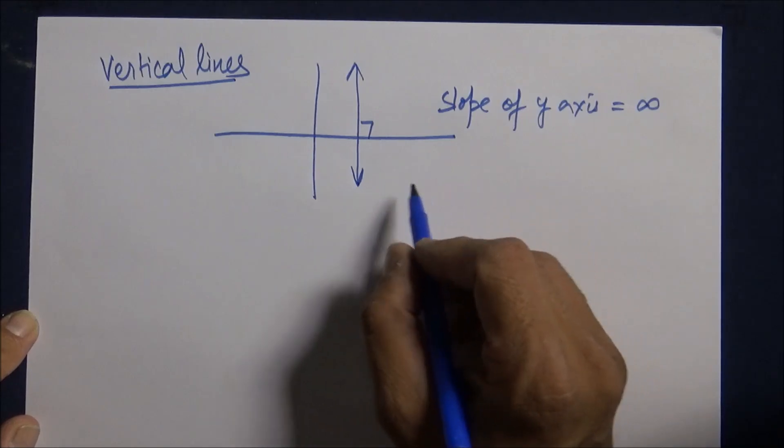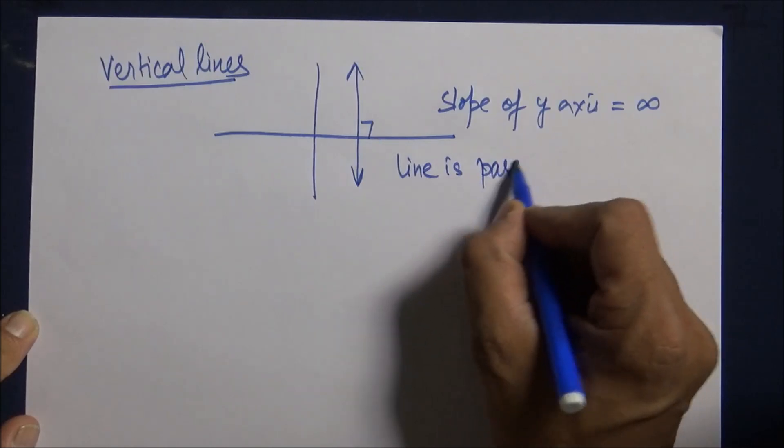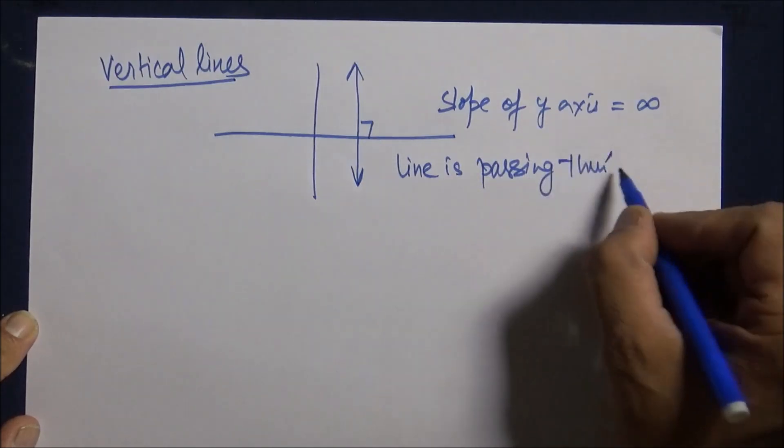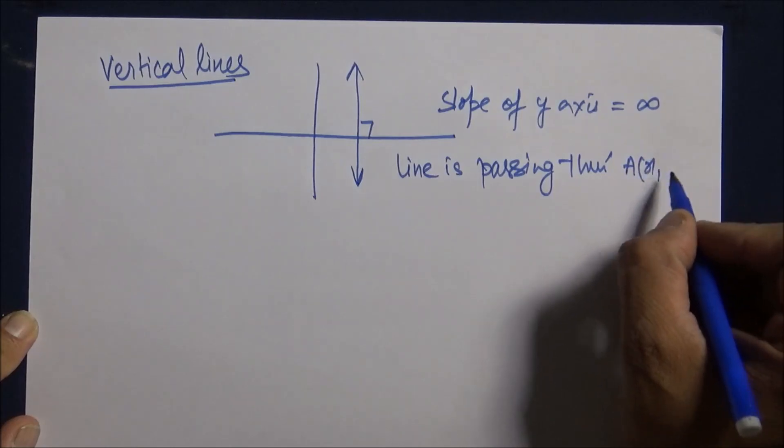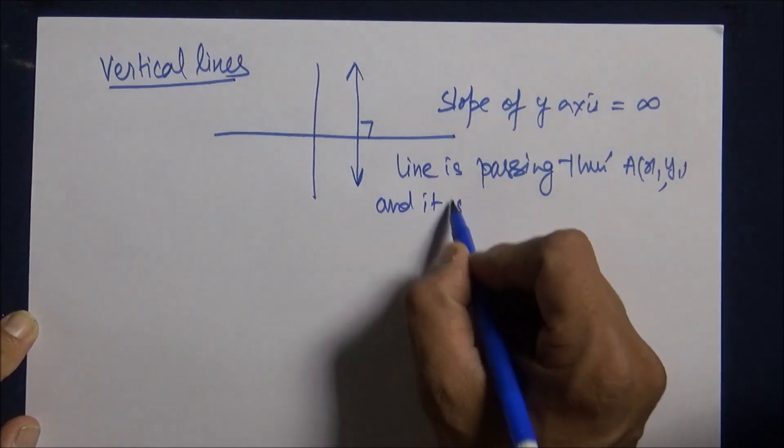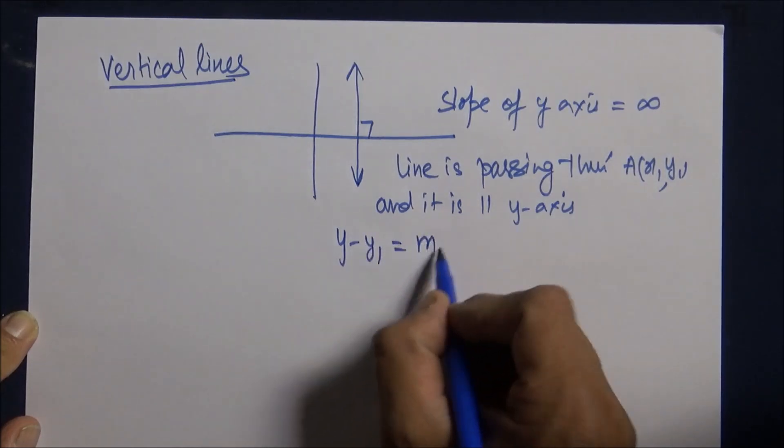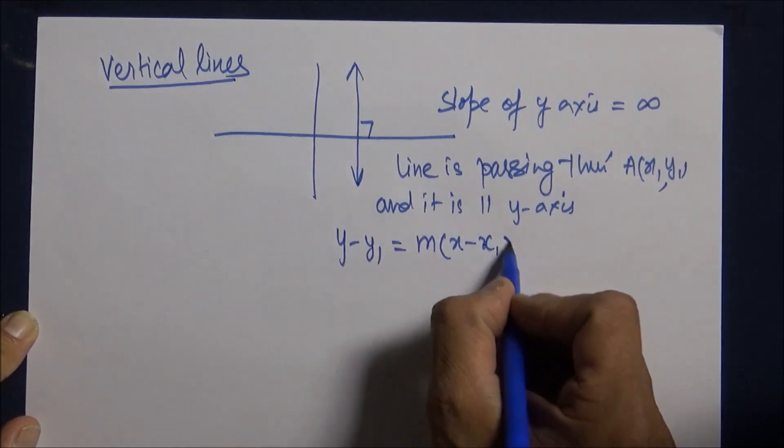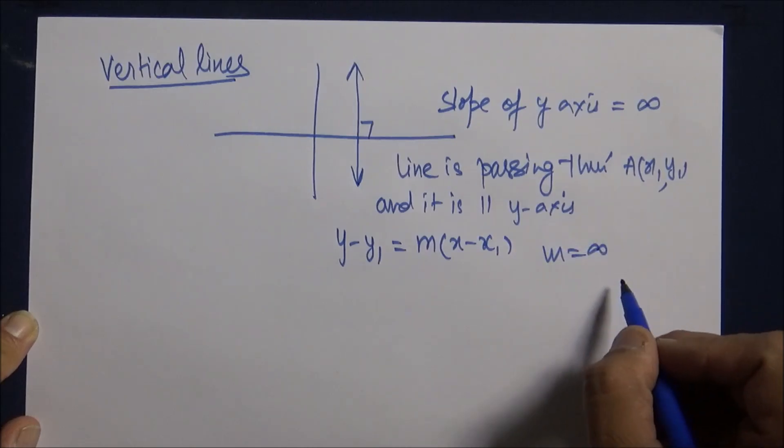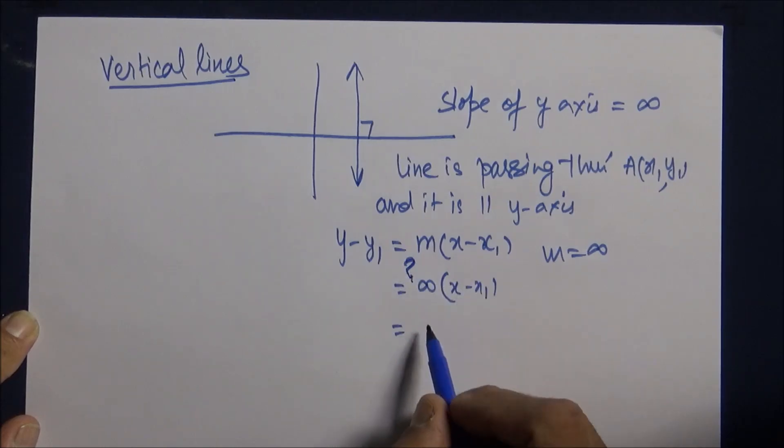Assuming that the line is passing through (x1, y1) and it is parallel to the y-axis. Its equation will be y minus y1 equals m times x minus x1. But what is m? m is infinity because this time the line is parallel to the y-axis. That's why, vertical line.